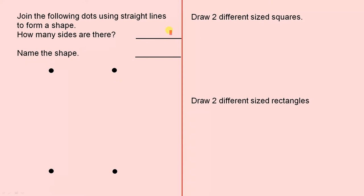Here we have four dots again. Join the following dots using straight lines to form a shape. How many sides are there? Name the shape.